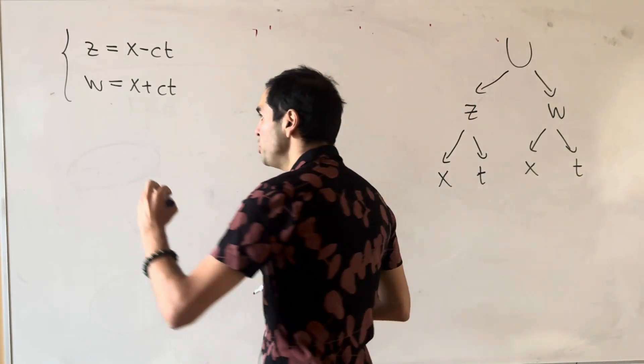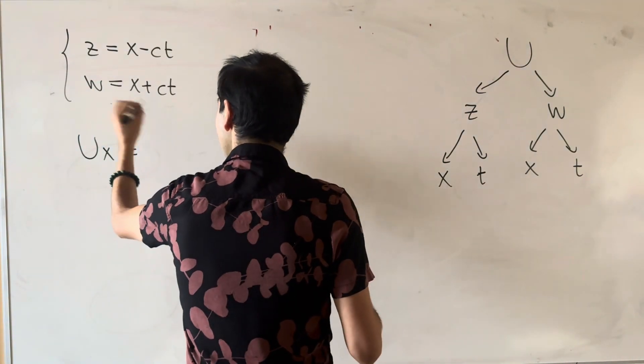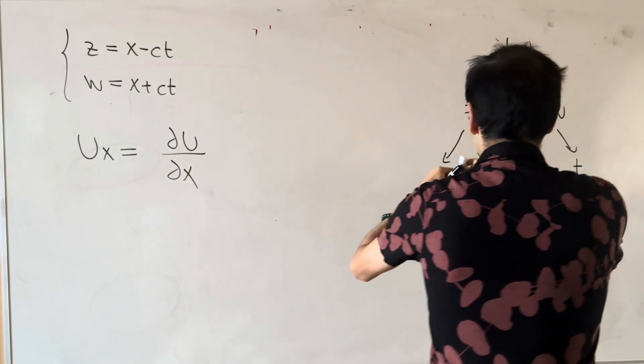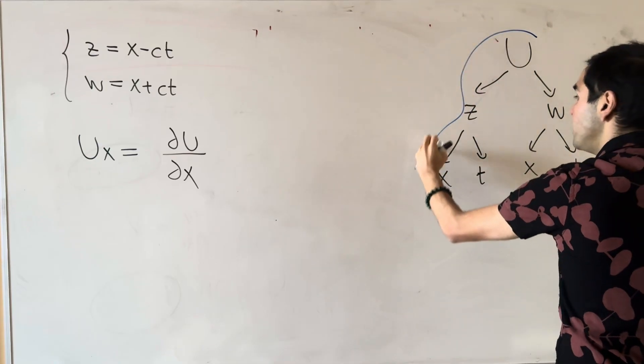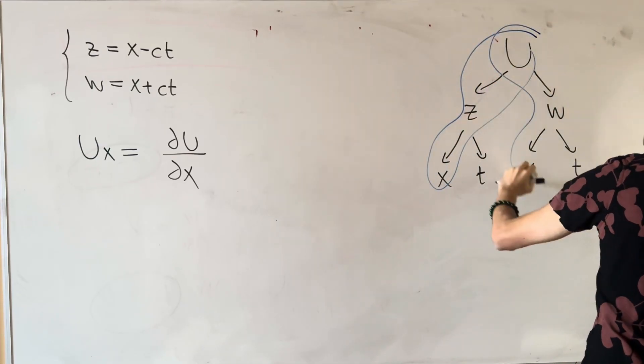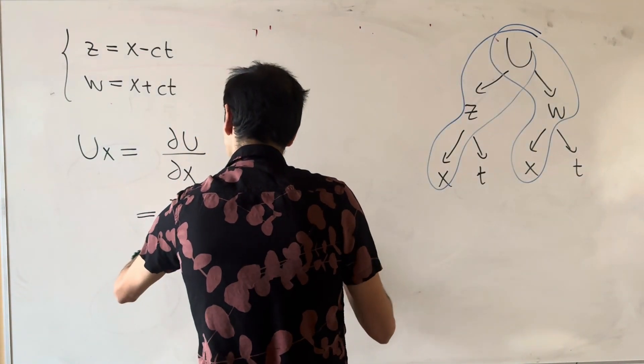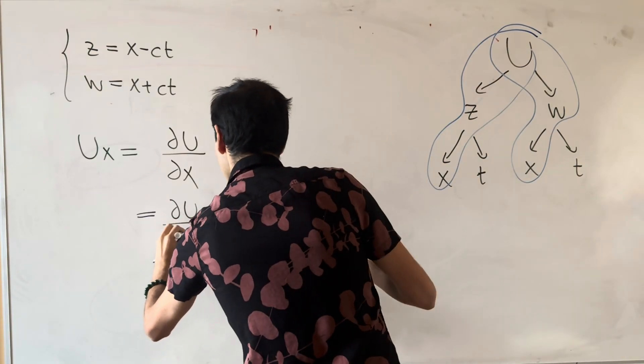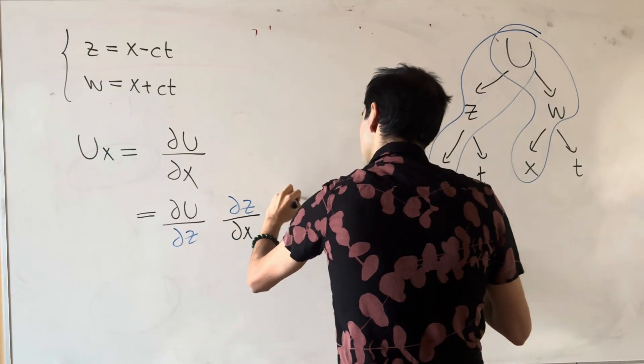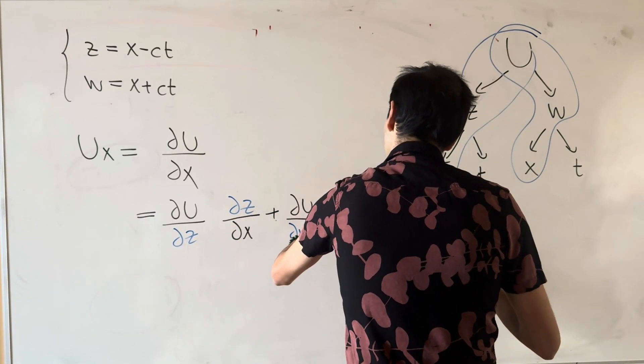Let's calculate U_x and U_t in terms of our new variables. So U_x is du over dx, and then literally follow the chains. So it's du over dz times dz over dx, and then du over dw times dw over dx.